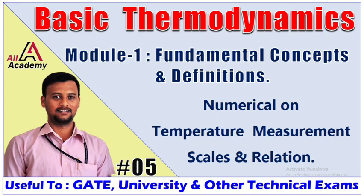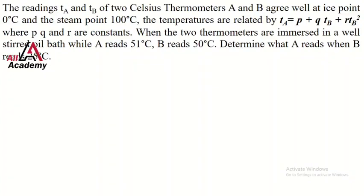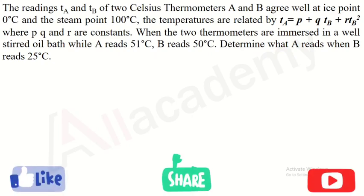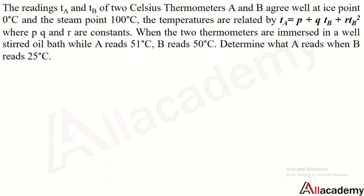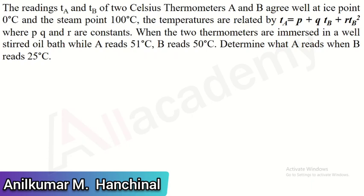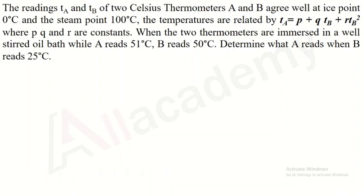The first problem statement is: readings ta and tb of two Celsius thermometers A and B agree well at the ice point (0°C) and steam point (100°C). The temperatures are related by ta = p + q·tb + r·tb², where p, q, r are constants. When the two thermometers are immersed in a stirred oil bath, A reads 51°C and B reads 50°C.